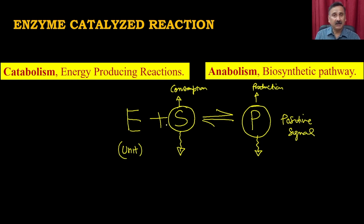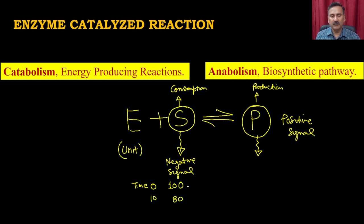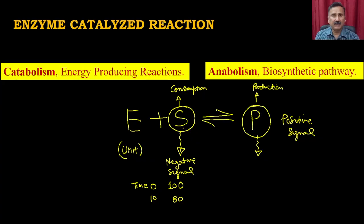When you see disappearance of the substrate, it gives a negative signal. For example, if you start with 100 molecules of substrate at time zero, and you are measuring the absorbance of the substrate exclusively with no cross-reactivity from product or enzyme — if 100 molecules gives absorbance 0.8, then after 10 minutes with 80 molecules the absorbance will be 0.6.